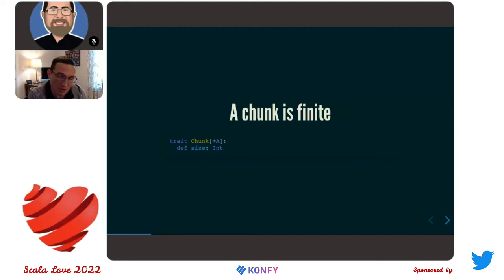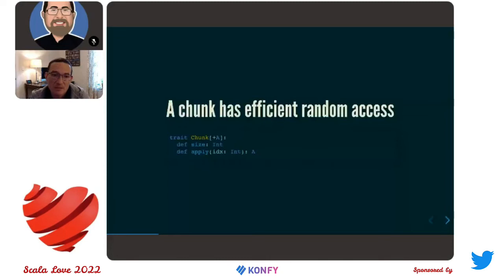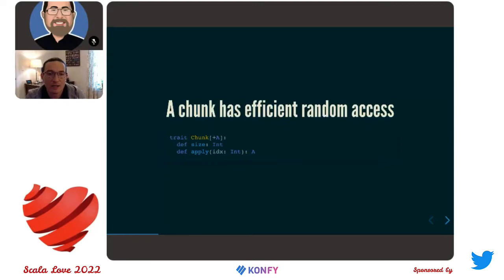We're going to have that efficient random access operation — an index-based lookup. We have to make some design trade-offs right away. If we're going to make random access efficient and useful with while loops, we probably don't want to return an Option — especially when working with tons of binary. So we're going to trade off a little bit of our totality, a little bit of our safety that a normal API would provide, in exchange for throwing exceptions when the index is out of bounds.